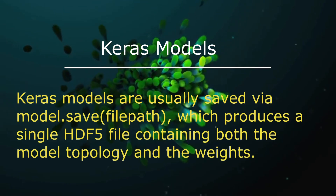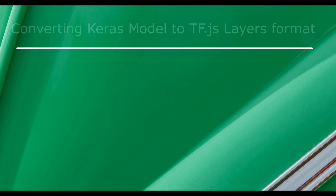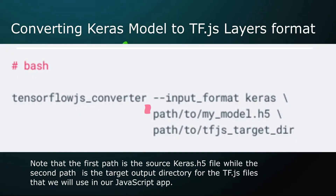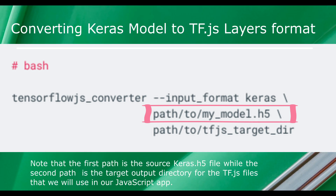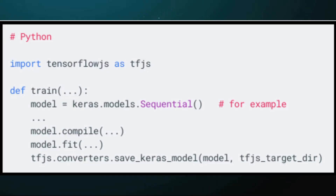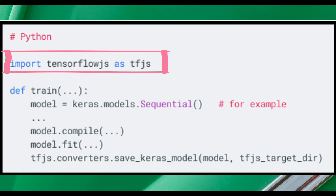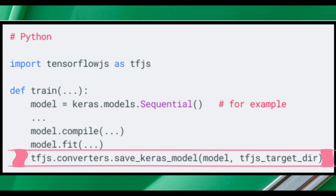Keras models are usually saved via model.save file path, which produces a single HDF5 file containing both the model topology and the weights. To convert such a file to tf.js layers format, run the following command. Note that the first path is the source Keras .h5 file, while the second path is the target output directory for the tf.js files that we will use in our JavaScript app. Alternatively, use the Python API to export directly to tf.js layers format — import the TensorFlow.js library in Python and use it to save the model to the target directory.